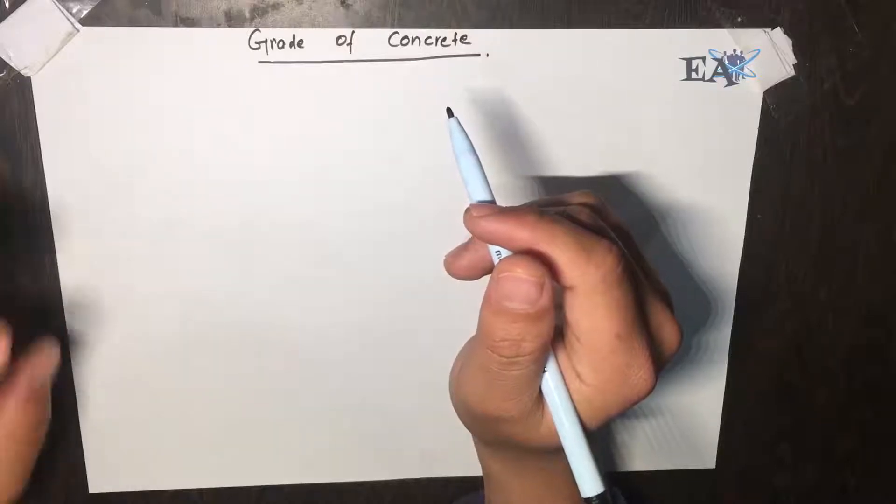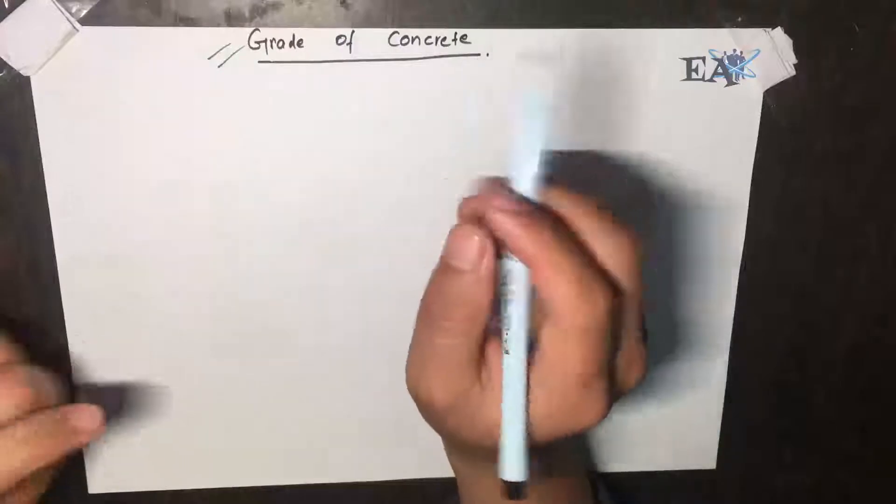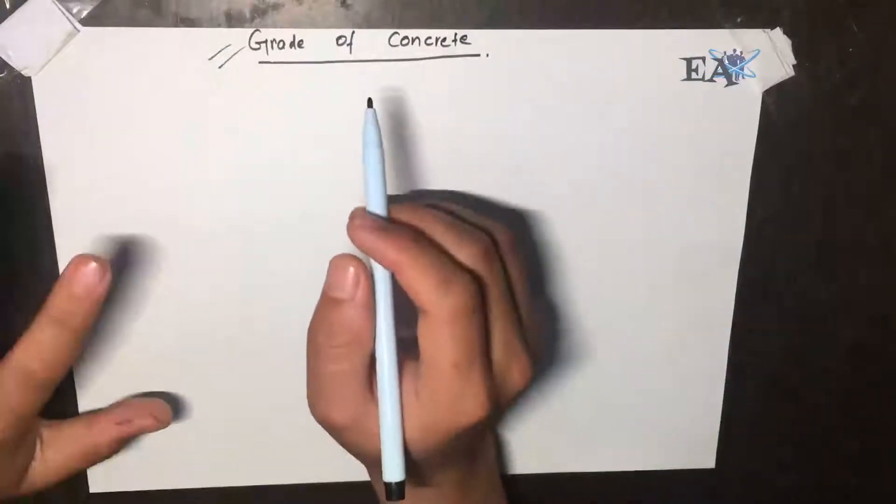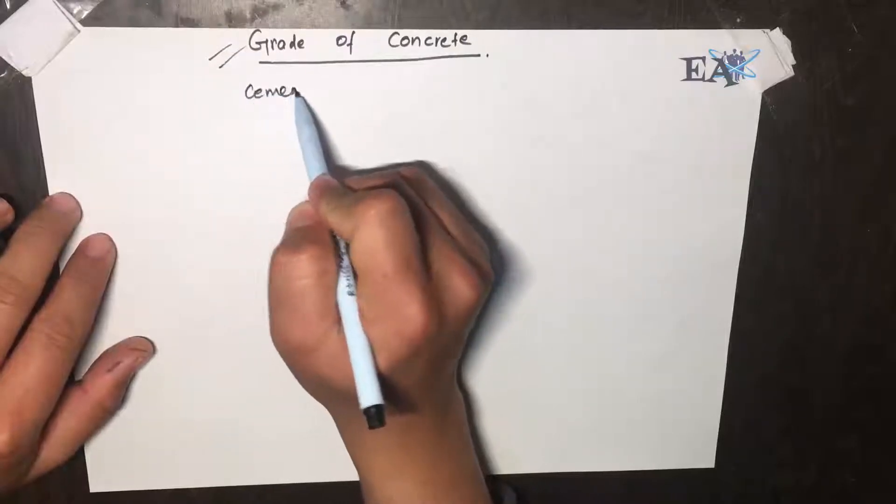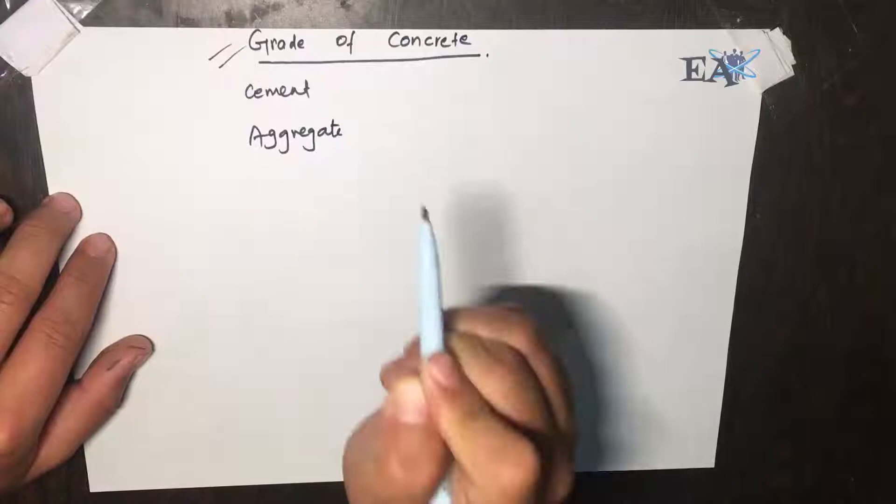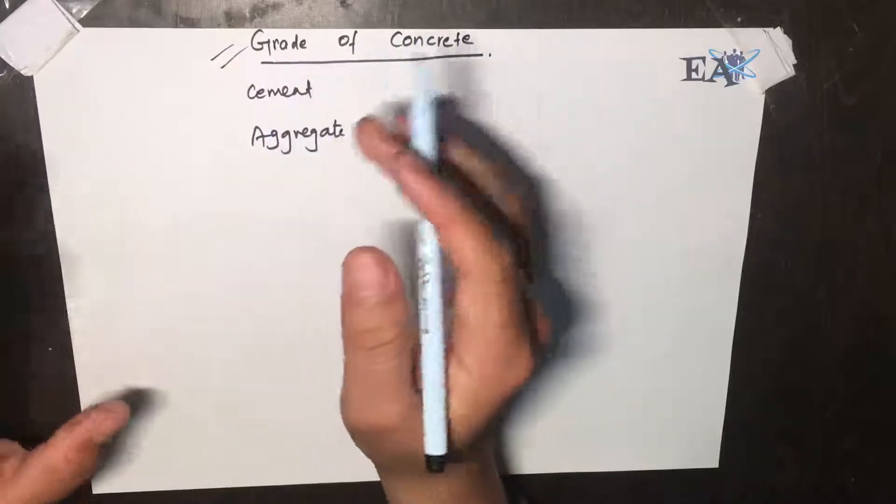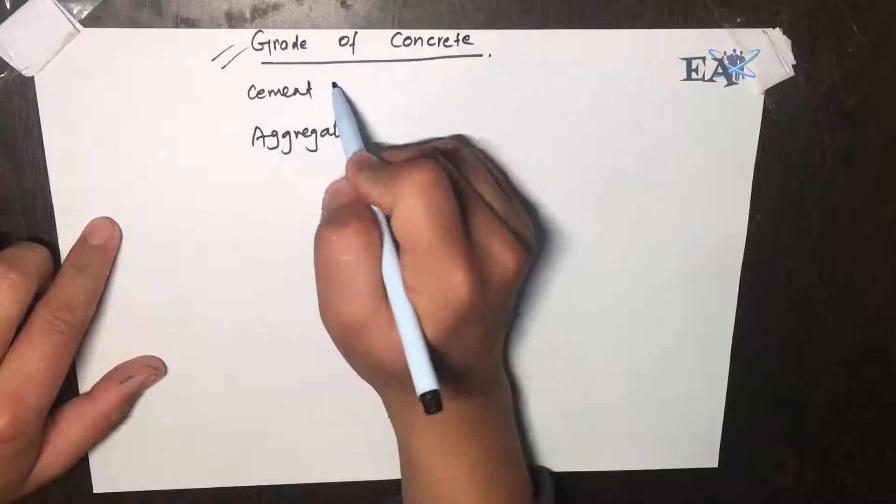Hey everybody, welcome to Interview Equation series. In this video we'll be talking about the grade of concrete. So we know that the basic constituents of a concrete mix are cement and aggregate. We got other things like additives and water as well, but these two are the basic things. The cement acts